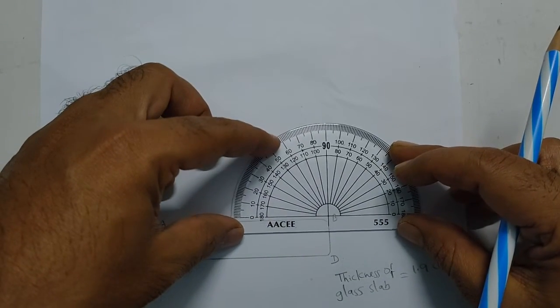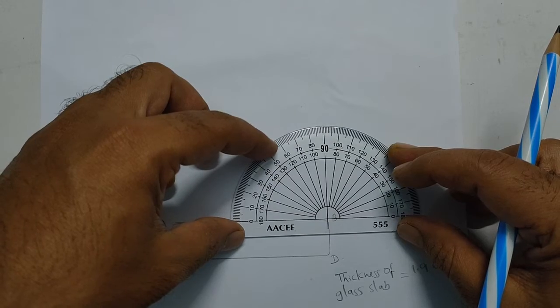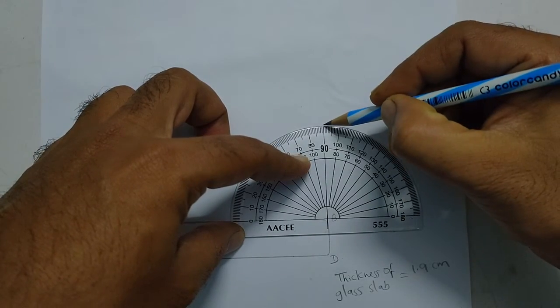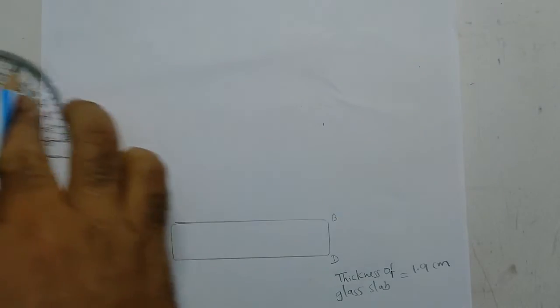Now draw a perpendicular line to the longer line A, B of the rectangle as shown below.